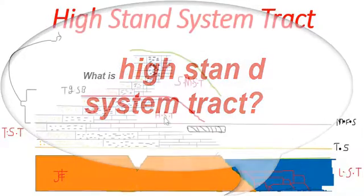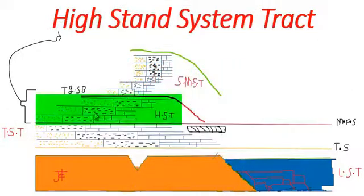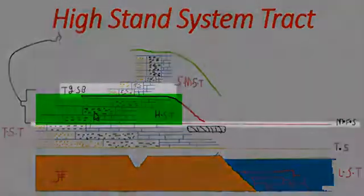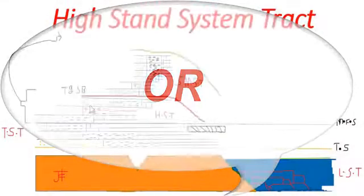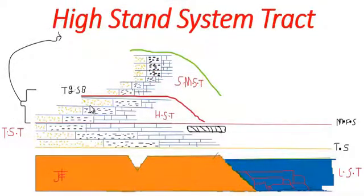High stand system tract is a genetically related strata bounded below by maximum flooding surface and above by type 2 sequence boundary. High stand system tract lies between maximum flooding surface and type 2 sequence boundary.